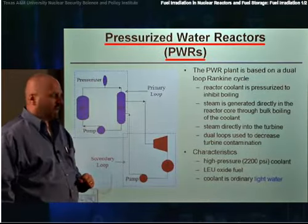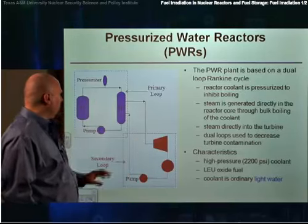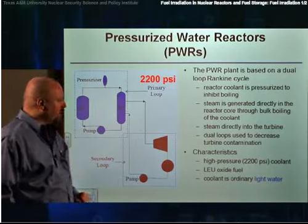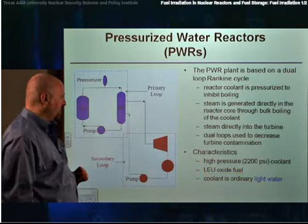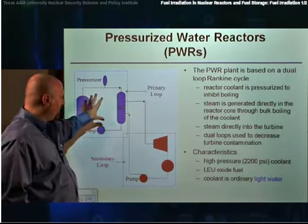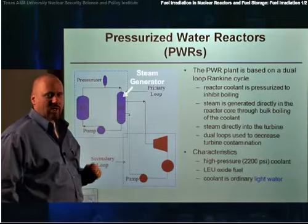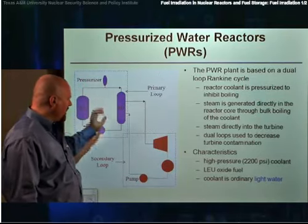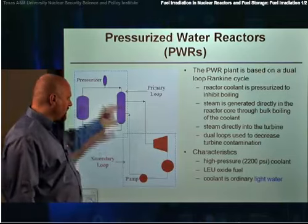The pressurized water reactor, or PWR, which is probably the most common reactor system in the world, is slightly more complicated. It actually has a dual-loop structure, with a primary loop and a secondary loop. The primary loop is kept at a very high pressure, around 2,200 psi. It still uses a light water coolant and a low-enriched uranium oxide fuel, like the BWR. But since it's at a higher pressure, this coolant does not boil — it stays in liquid form the entire time. The secondary loop is kept at a lower pressure, and that coolant boils in a steam generator, and that steam is used to drive a turbine. The dual-loop system allows you to keep any radiation from contaminating the turbine, because it's separated into two separate loops.